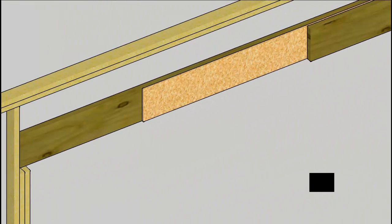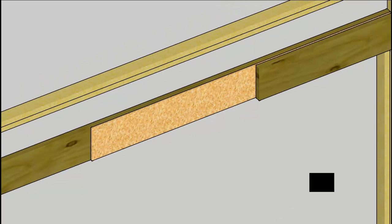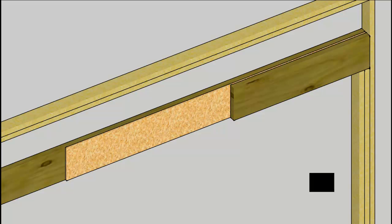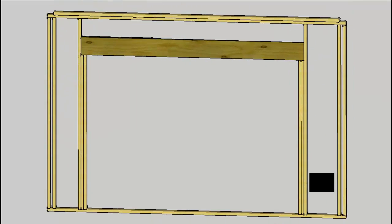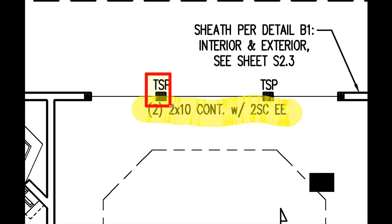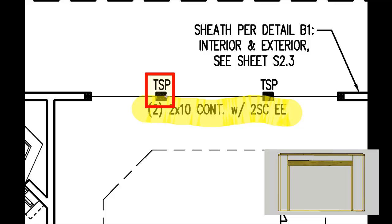Rotating the wall around, we see that this header is comprised of two 2x10s sandwiched together with a piece of ½-inch thick oriented strand board between them. That material allows the header to be 3½ inches thick to match the width of the 2x4 framing in the wall. The last thing we see is some intermediate supports identified as three 2x4s sandwiched together to create a post for support across the run of the header.